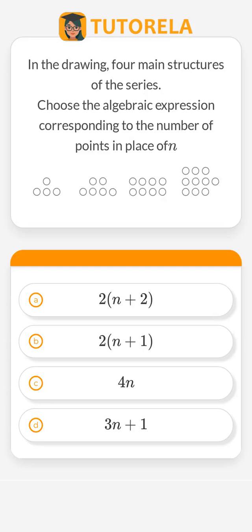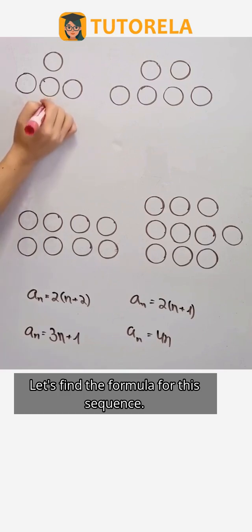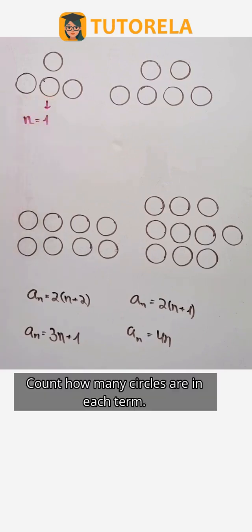Choose the algebraic expression corresponding to the number of points in place of n. Let's find a formula for this sequence. Count how many circles are in each term.